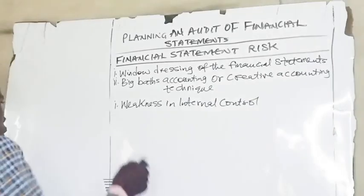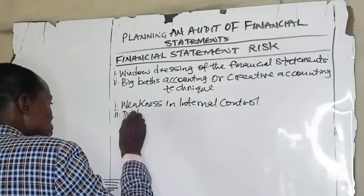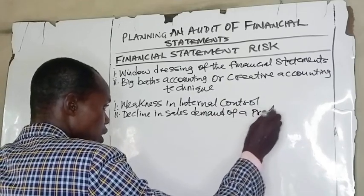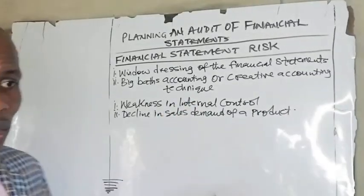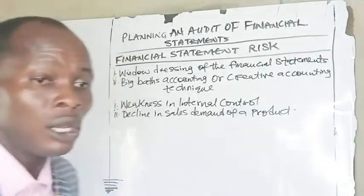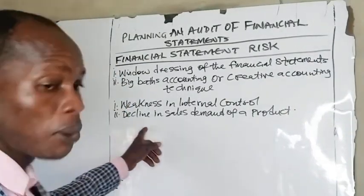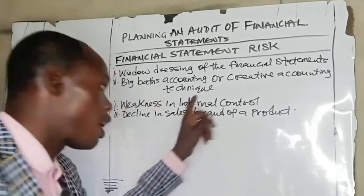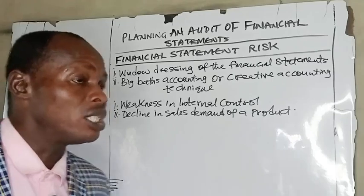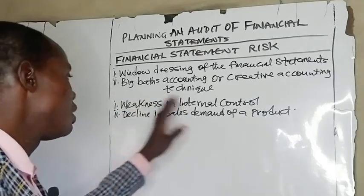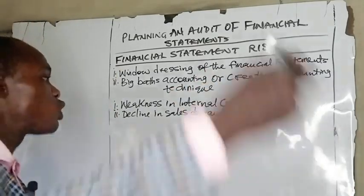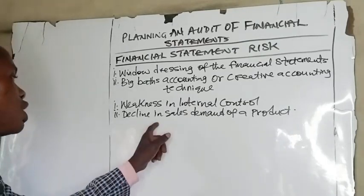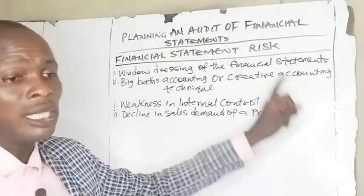Risk of decline in sales demand for a product is also a business risk. How could this lead to financial statement risk? A decline in sales demand could raise questions about the obsolescence of the inventory. That means you will need to measure your inventory at the lower of cost or net realizable value. Failure by the entity to restate their inventory to the lower of cost or net realizable value would result in financial statement risk.